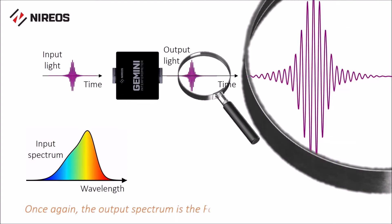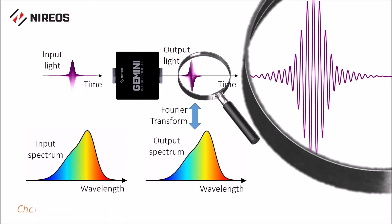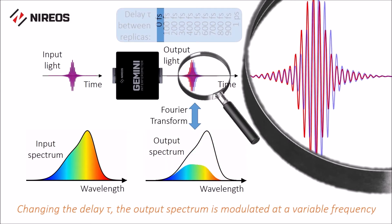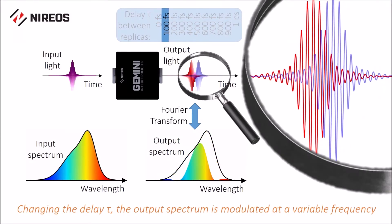Once again, the output spectrum is the Fourier transform of the output light. Therefore, the spectrum of two delayed replicas of the light is modulated with a frequency proportional to such a delay.